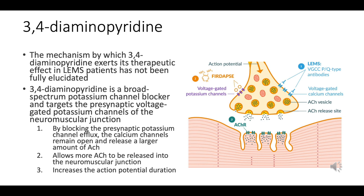Due to the enhanced calcium influx, a larger amount of acetylcholine is released into the neuromuscular junction. The action potentials at the nerve terminals are prolonged, further facilitating acetylcholine release. As a result, there is an improvement in muscle strength and neurotransmission in LEMS patients. The complete spectrum of how 3,4-DAP exerts its therapeutic effects is still a subject of ongoing research.